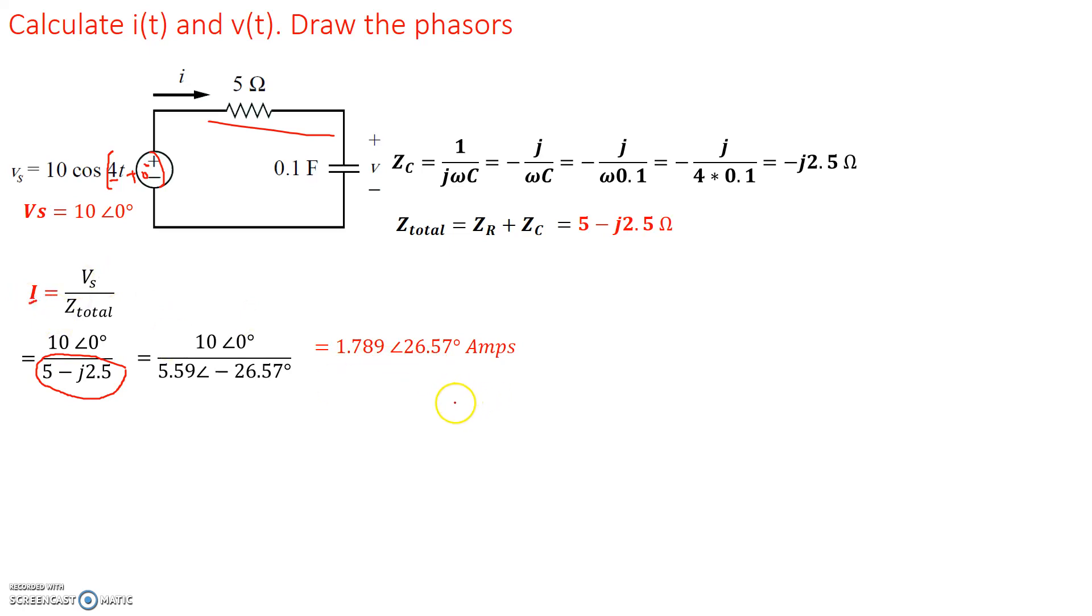Now that's i in the phasor domain. Our initial problem was given in t and we're asked to calculate i(t). So converting that to time domain is simple as this is the magnitude of the cosine. That's the phase angle of the cosine. And since the frequency was 4, omega was 4, we'll have 4 in the output as well. So i(t) is 1.789 cosine(4t + 26.57°) amps.